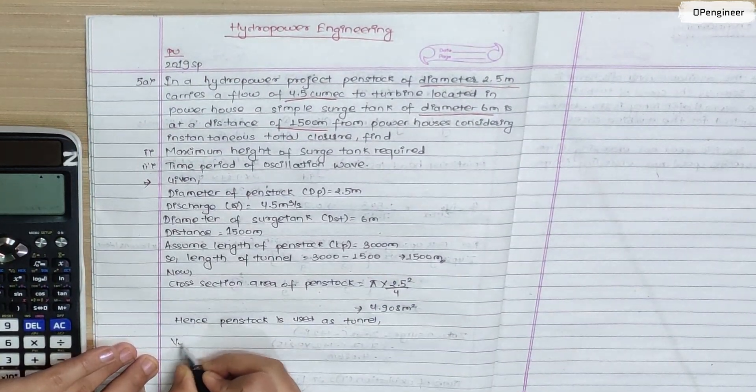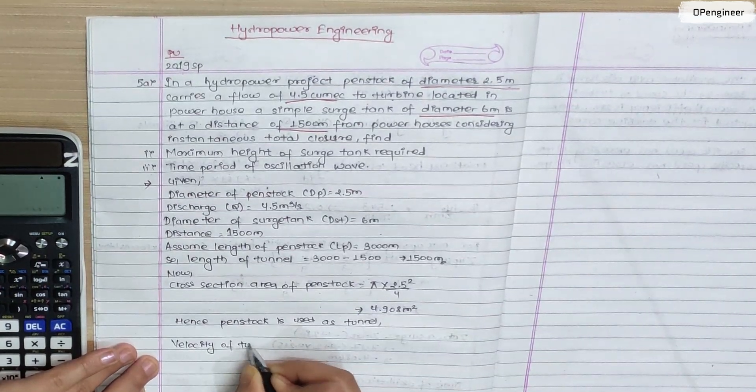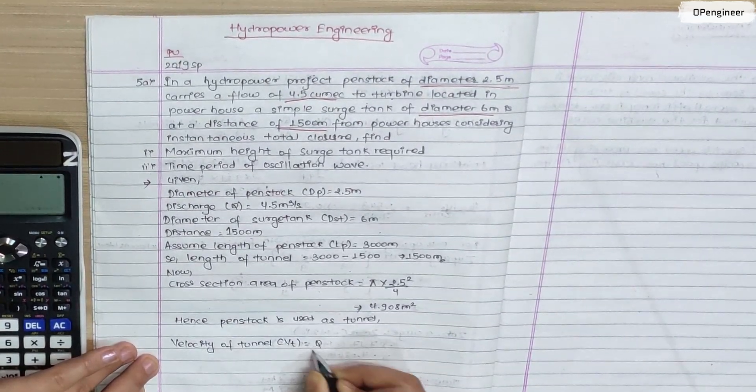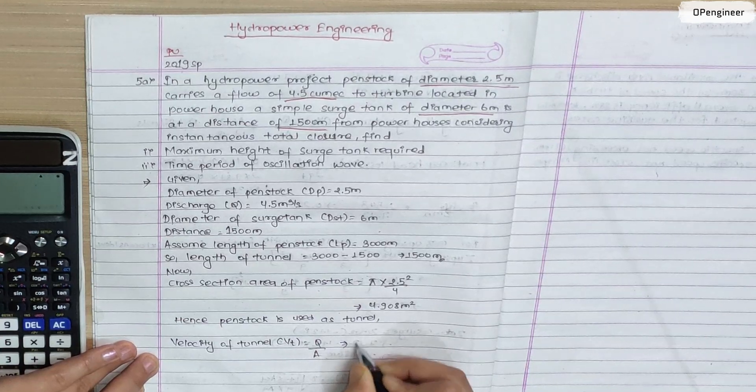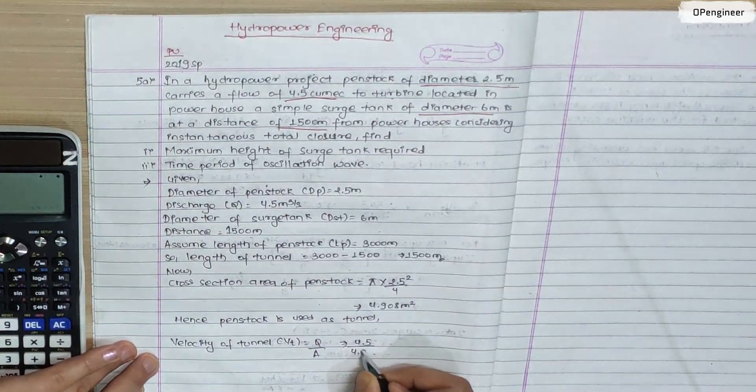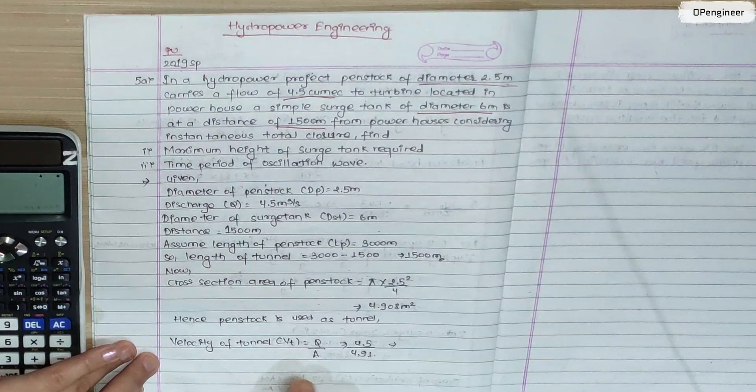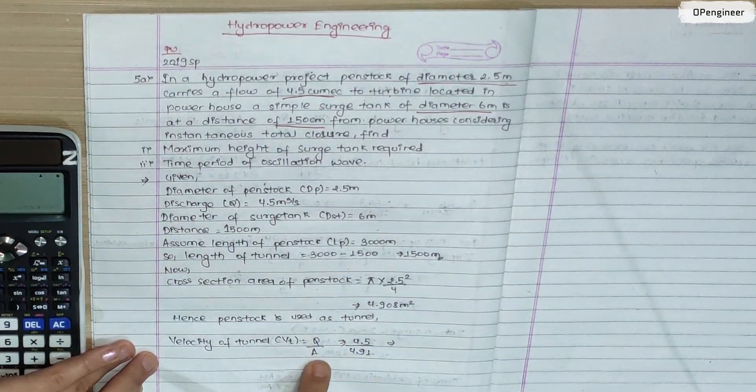Then, we calculate velocity of tunnel. This is the formula discharge by area. Discharge of 4.5 is 4.91. This is the velocity of tunnel.